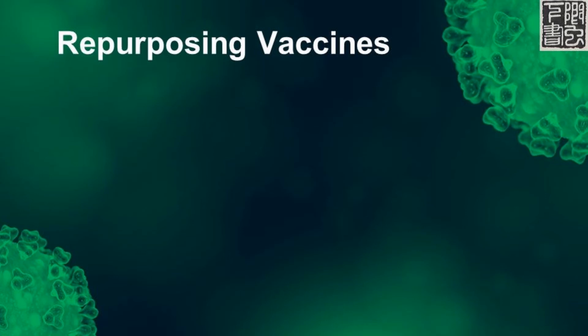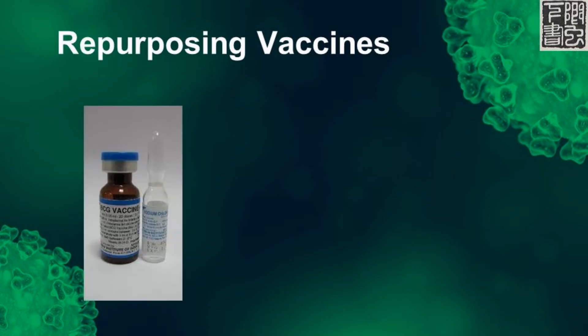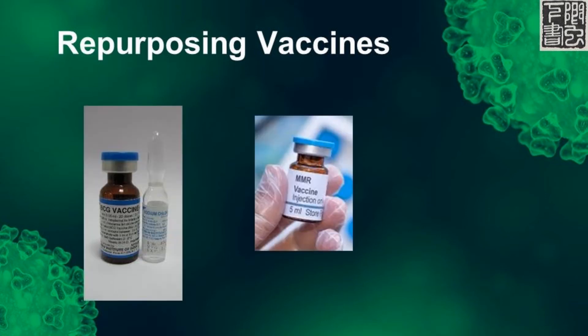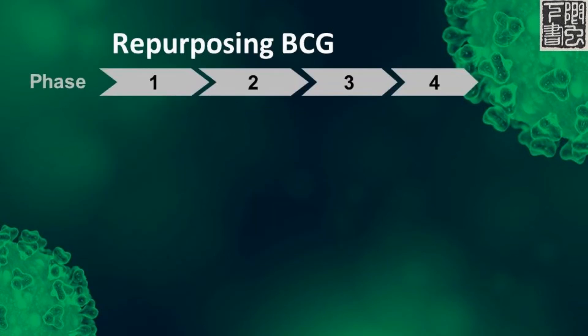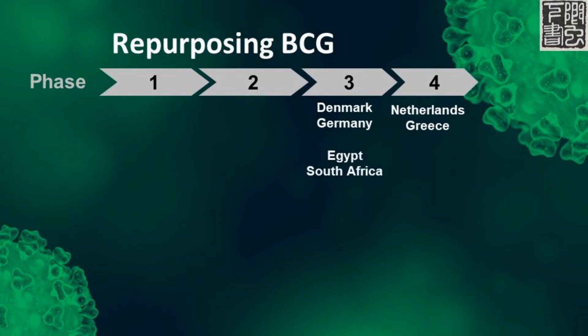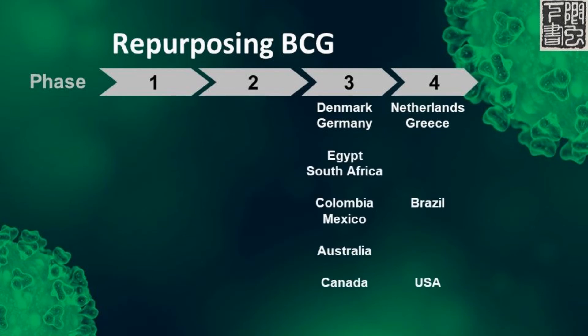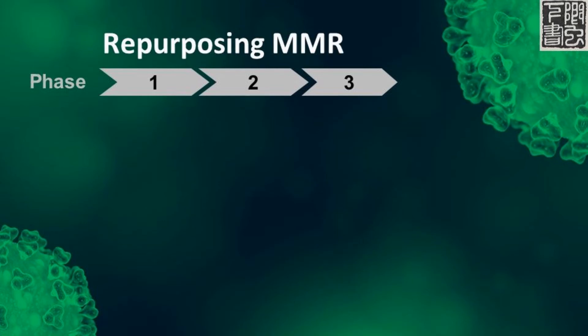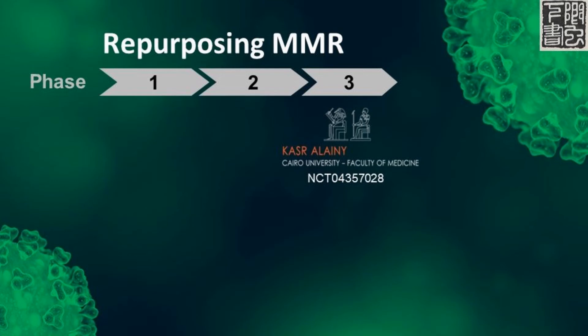Lastly, there's the repurposing of existing vaccines. BCG is a vaccine for tuberculosis, and MMR is the vaccine against measles, mumps, and rubella. There are recent publications showing that these vaccines stimulate the immune system in a general way and may have protective effects against COVID. As for using BCG against COVID, there are many clinical trials in the EU, Africa, South America, Asia, and North America. As for the MMR vaccine against COVID, the Kaiser al-Alani hospital in Egypt has a trial in Phase 3. If the BCG or MMR are found to be effective against COVID, they can be approved much more quickly than other vaccines.